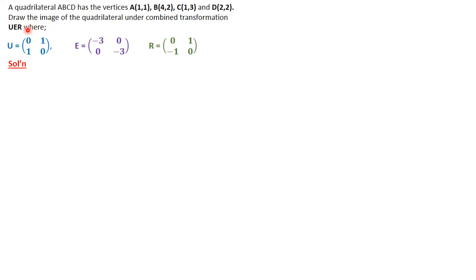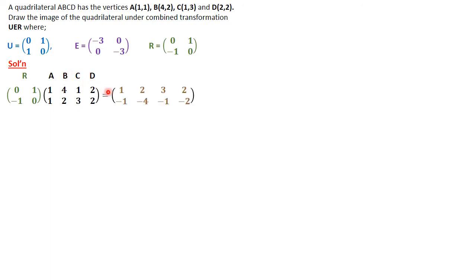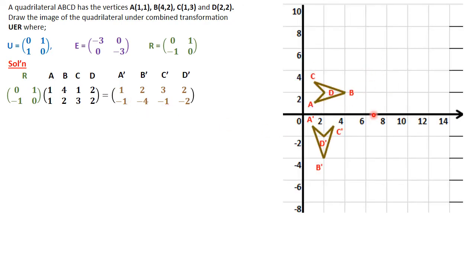We need to notice that first we perform transformation R: ABCD is pre-multiplied by R. That image is pre-multiplied by E. That image is again pre-multiplied by U to get the final image we need to draw. First, R pre-multiplies ABCD, giving us coordinates of A', B', C', D'. Plotting that on the Cartesian plane, ABCD is the original quadrilateral. The matrix R is [0,1; -1,0].